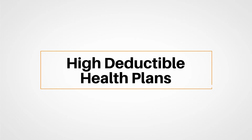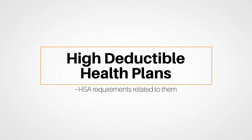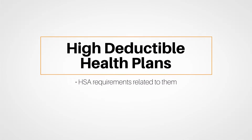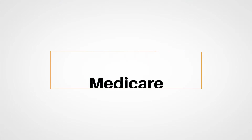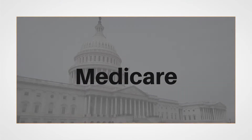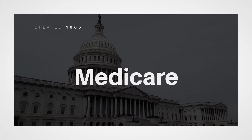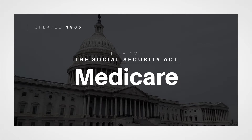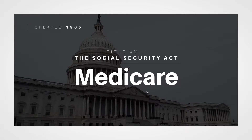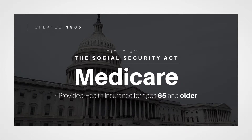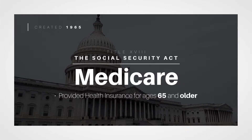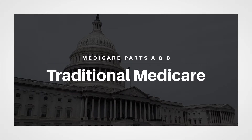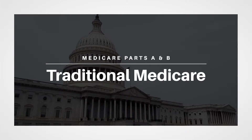We finished the section with a view of high deductible health plans and the HSA requirements related to them. Next, we'll study Medicare. In 1965, Congress created Medicare under Title 18 of the Social Security Act to provide health insurance to people age 65 and older, regardless of income or medical history. This created Medicare Parts A and B, or traditional Medicare.